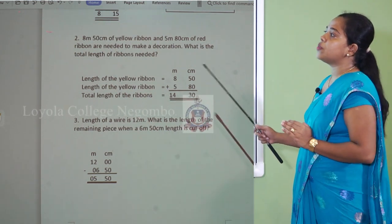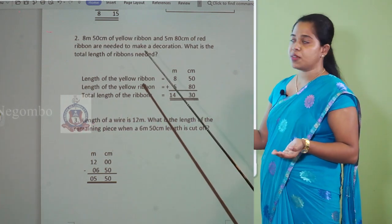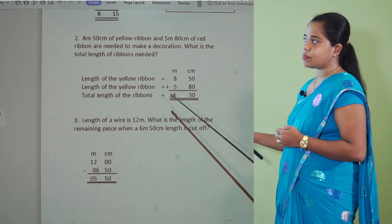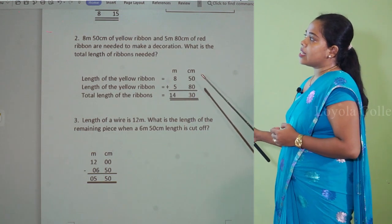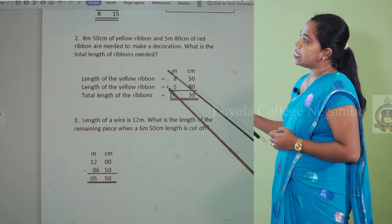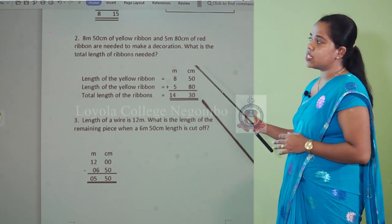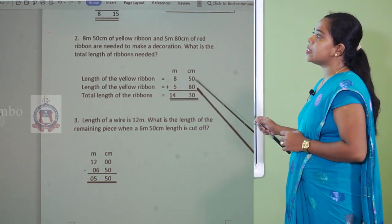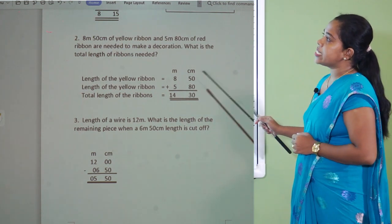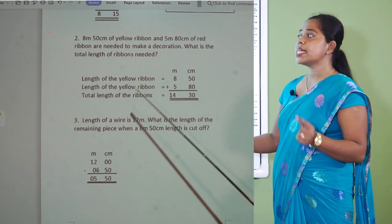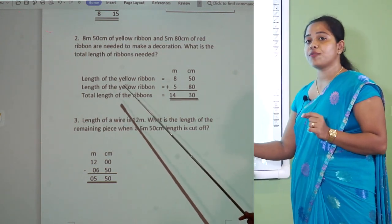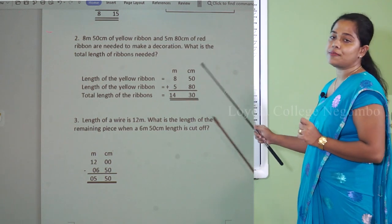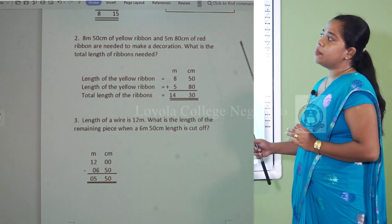For the first statement, write the length of the yellow ribbon — please indicate the meters and centimeters symbols, otherwise your answer will be wrong. Write simple m and simple cm: 8 meters and 50 centimeters. The second statement is the length of the red ribbon: 5 meters and 80 centimeters.